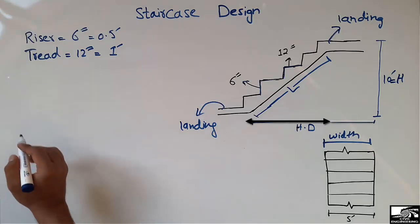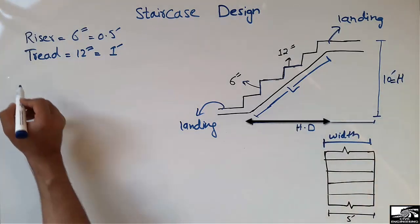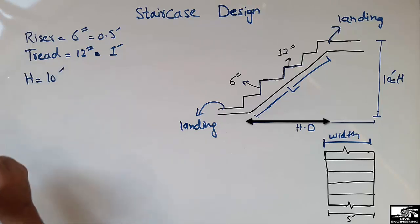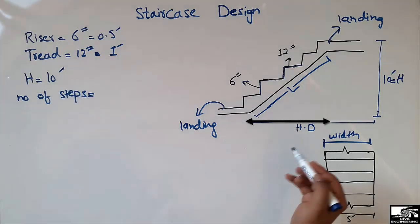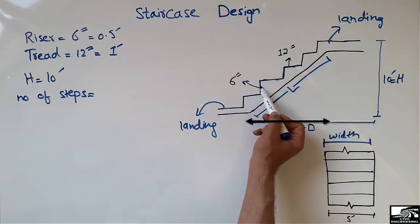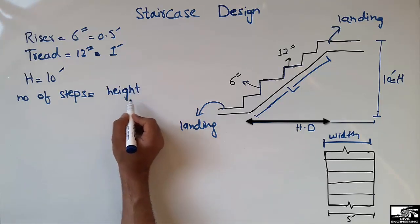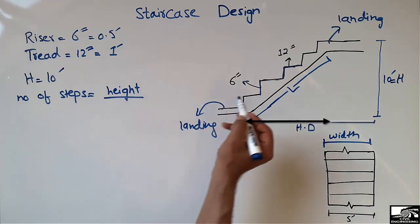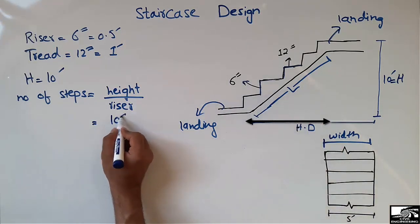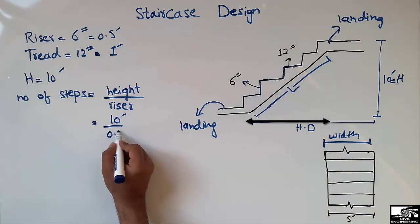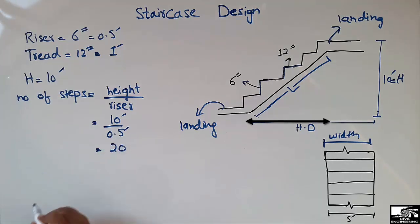First, let's calculate the number of steps used in this staircase. For example, the height of the staircase is 10 feet, and we want to find the number of steps using a riser of 6 inches and a tread of 15 inches. The number of steps is found by dividing the total height by the riser height: 10 feet divided by 0.5 feet — both must be in the same units.